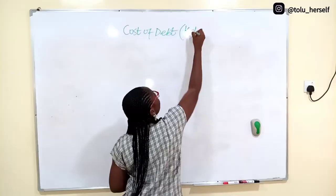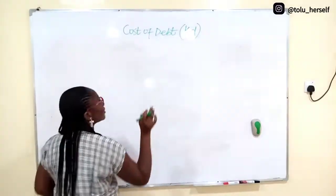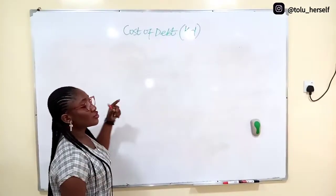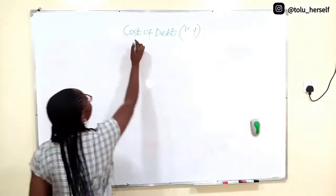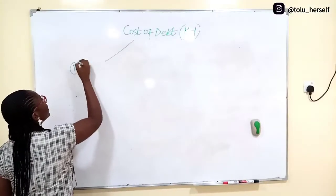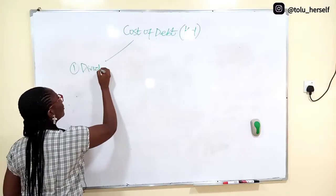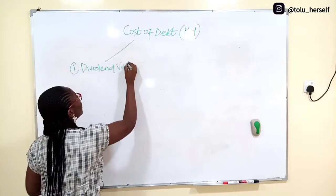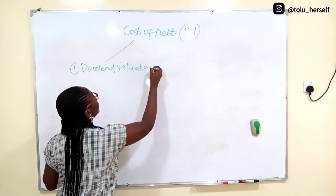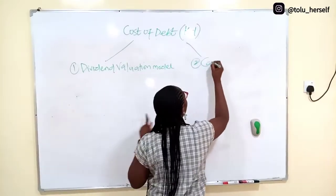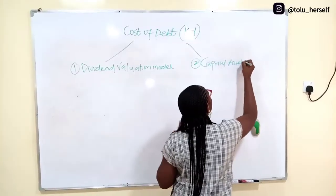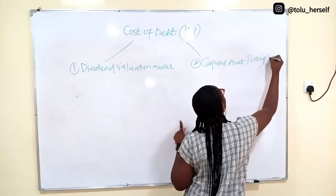Cost of debt is represented as KD. I said it in the introductory class that there are two major approaches to estimating cost of debt. We have the dividend valuation model and two, we have the capital asset pricing model.